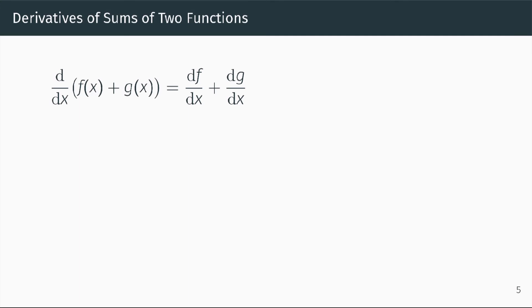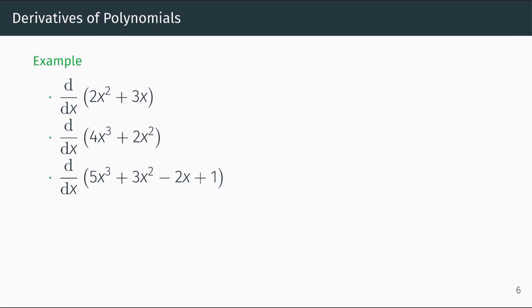Another property of differentiation is that if we have a function f(x) and another function g(x) and we add them together, then the derivative of f(x) plus g(x) with respect to x equals the derivative of f with respect to x plus the derivative of g with respect to x. For example, the derivative of 2x squared plus 3x equals the derivative of 2x squared plus the derivative of 3x. The derivative of 2x squared is 4x and the derivative of 3x is 3, so the answer is 4x plus 3.